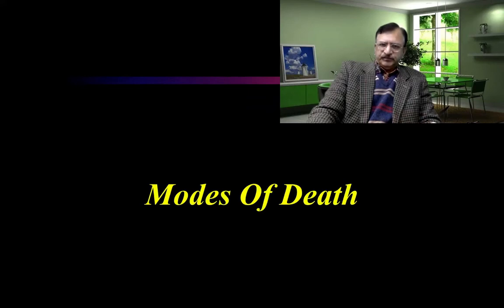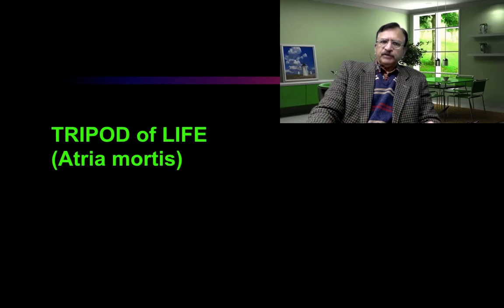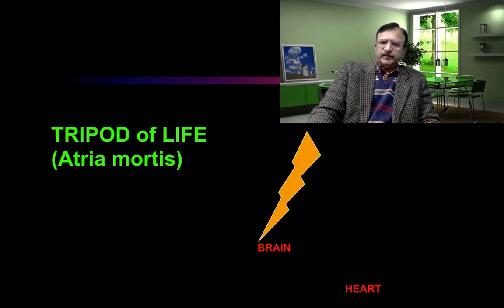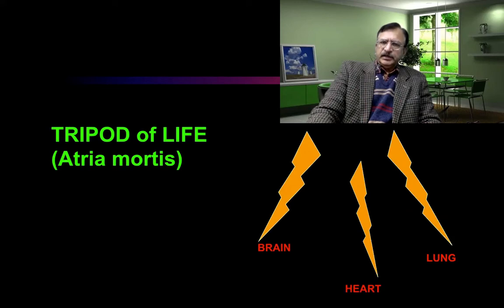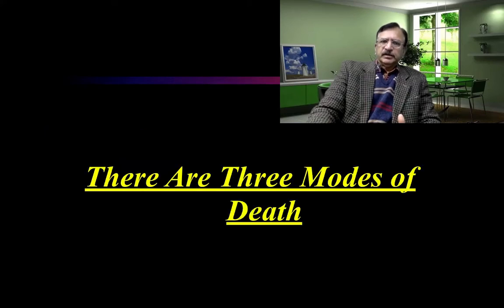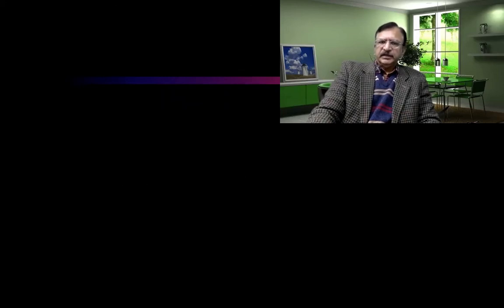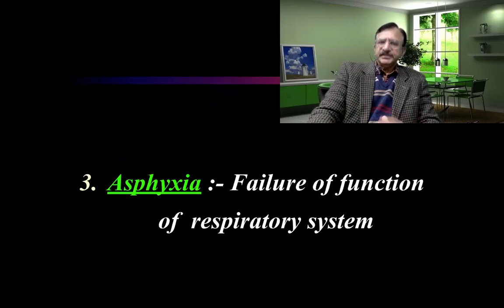Coming to the modes of death — there are basically three, because of the tripod of life. The tripod of life is based on the brain, heart, and lungs. The loss of one support will be the leading cause and the others will follow. So there are three modes of death: coma, because of the failure of the brain; syncope, because of the failure of the function of the heart and circulation; and asphyxia, because of the failure of the function of the respiratory system.